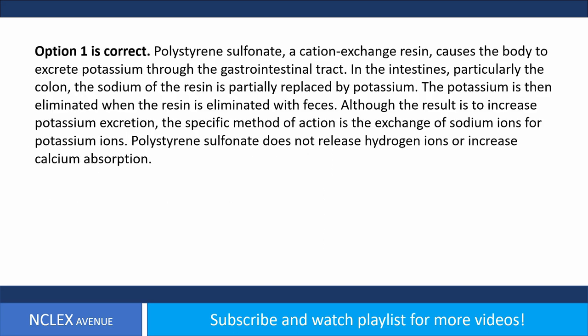Answer. Option 1 is correct. Polystyrene sulfonate, a cation exchange resin, causes the body to excrete potassium through the gastrointestinal tract. In the intestines, particularly the colon, the sodium of the resin is partially replaced by potassium. The potassium is then eliminated with feces. Although the result is to increase potassium excretion, the specific mechanism is the exchange of sodium ions for potassium ions. Polystyrene sulfonate does not release hydrogen ions or increase calcium absorption.